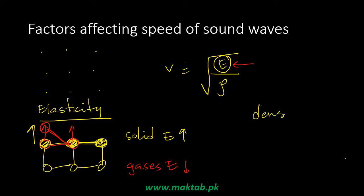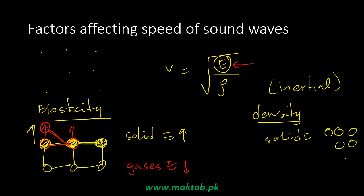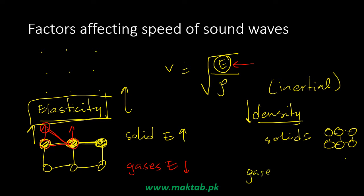The other factor is density, which is inversely proportional to the speed of sound. If density is higher, the speed of sound is lower. Density is an inertial property — higher density means more inertia, so the medium resists change. In solids, density is high, which would reduce speed, but elasticity dominates. In gases, density is low so particles can move faster, but elasticity is also low, making elasticity the more important factor.